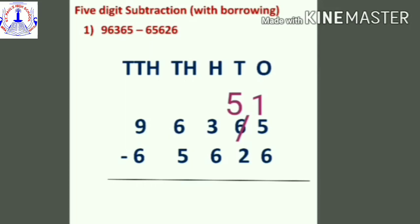Five will become fifteen. Six reduces to five because it gave one to the ones place. Now you can subtract six from fifteen — the answer is nine. In the tens place, five minus two: the answer is three.